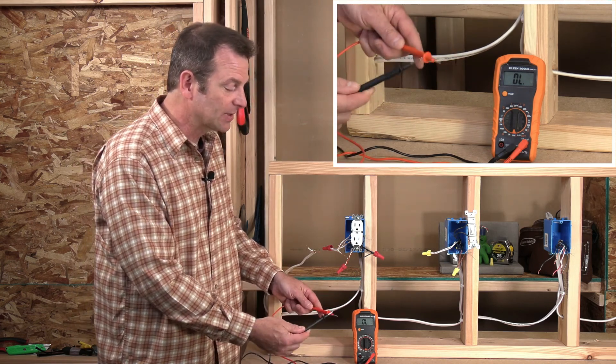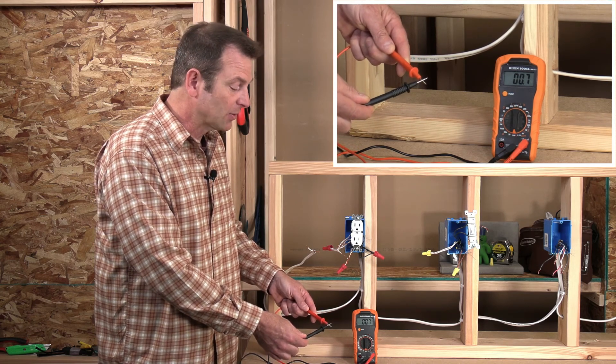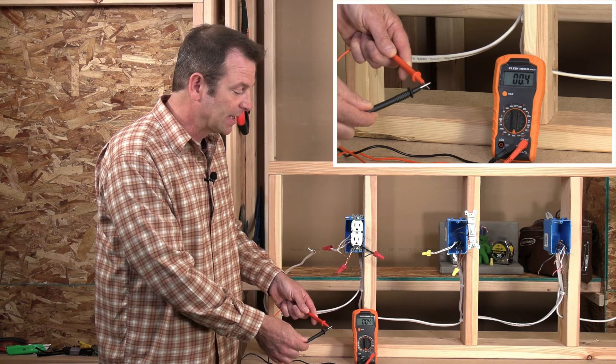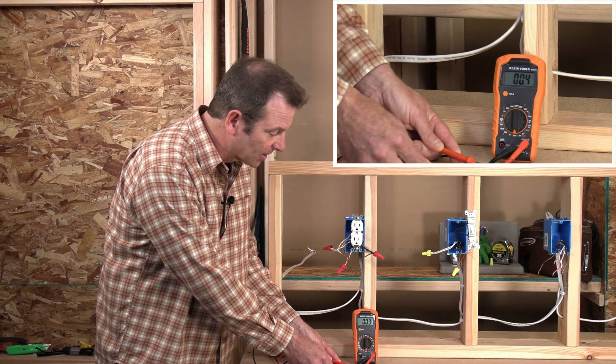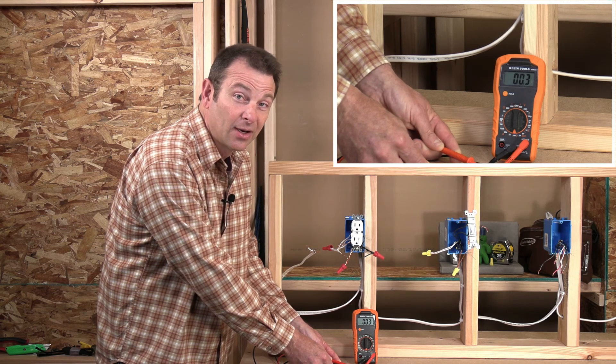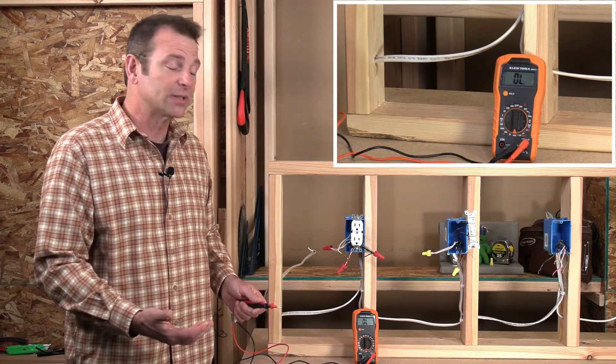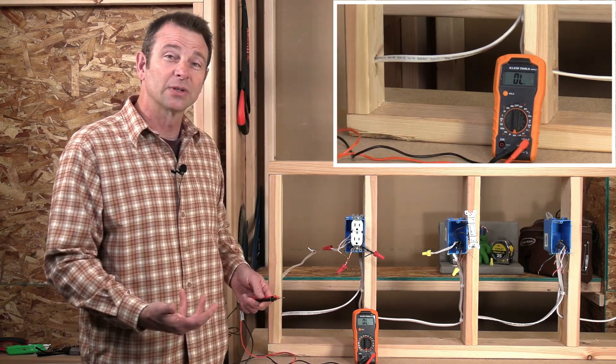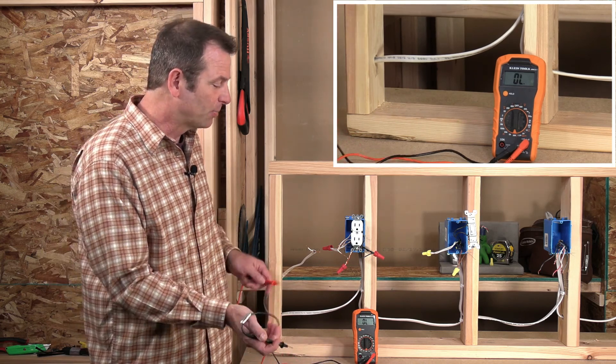Once I touch these two leads together, we are closing this circuit. So it's measuring between the probes and now I'm getting a reading that should be close to zero, which I'm at 003, which is almost 000. So I'm going to call that zero resistance. In the real world, there's always some resistance in everything, so we're going to allow a few points there.